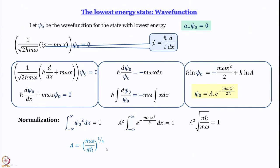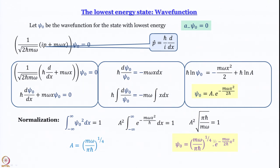We take the positive root by convention, though either sign works for a wave function. Now we can state that we have found ψ_0: it is (mω/πℏ)^(1/4) · e^(−mωx²/2ℏ). This is a Gaussian function — consistent with the diagram shown at the beginning of this module where the lowest energy wave function appeared Gaussian.